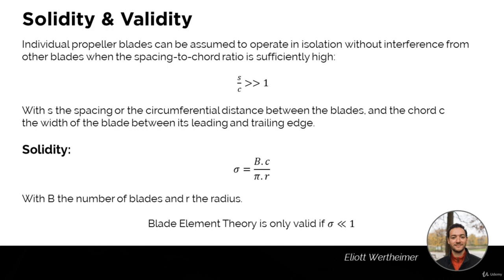The first concept within blade element theory is solidity, which is a way to check whether blade element theory can be valid and accurate enough in certain configurations — essentially, which propellers can work with blade element theory. Individual propeller blades can be assumed to operate in isolation without interference from other blades when the spacing-to-chord ratio is sufficiently high, expressed by the dimensionless ratio S over C which must be much greater than 1.